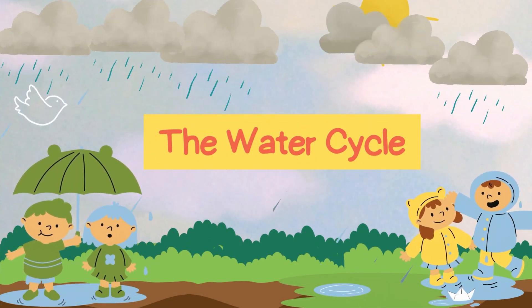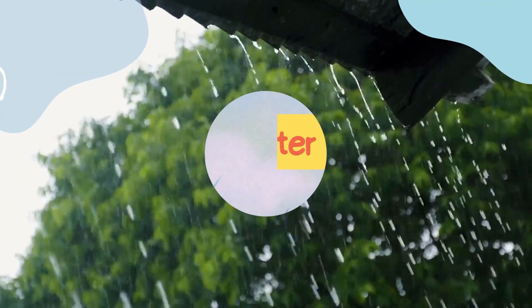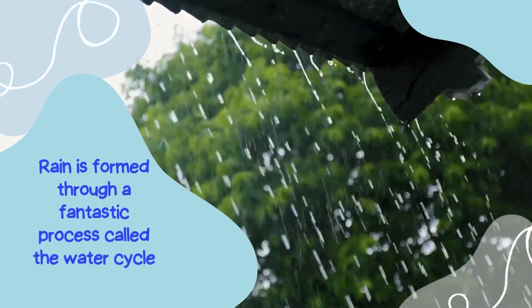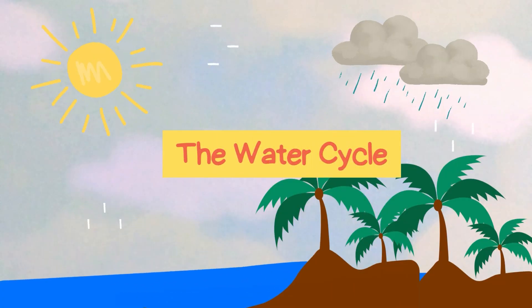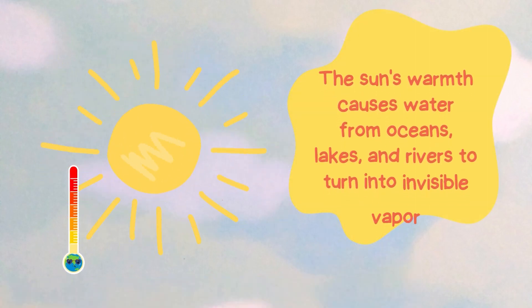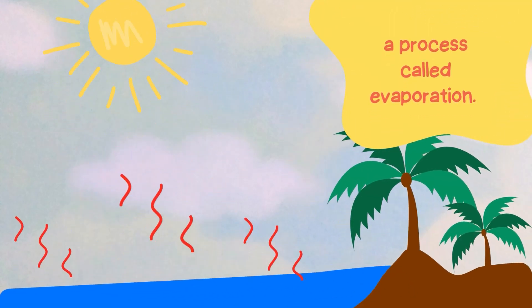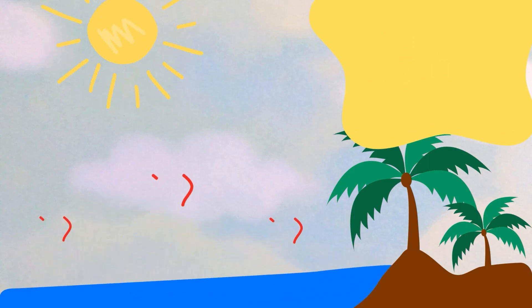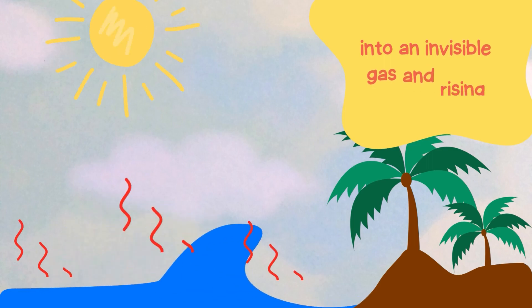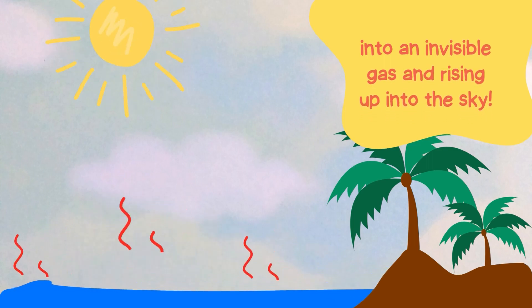The Water Cycle. Rain is formed through a fantastic process called the Water Cycle. It's like a big water adventure that starts with the sun. The sun's warmth causes water from oceans, lakes, and rivers to turn into invisible vapor — a process called evaporation. Just imagine water transforming into an invisible gas and rising up into the sky.